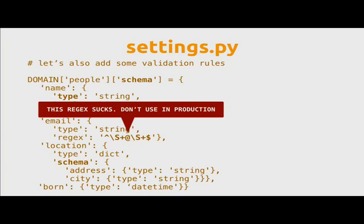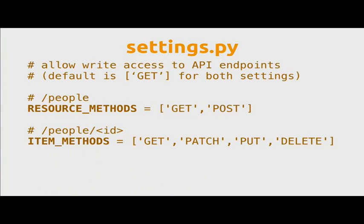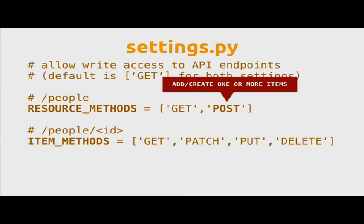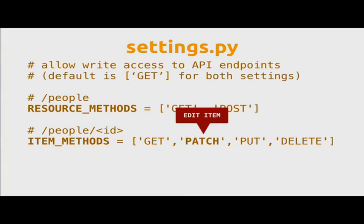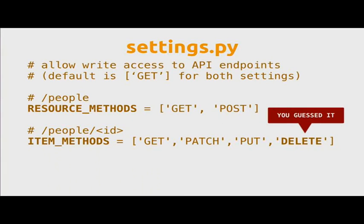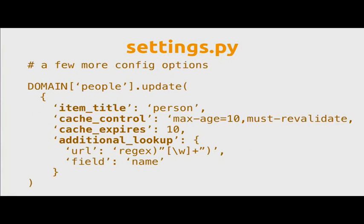By default, an API is read-only, but you can change that. Here we are enabling writing to the API endpoint, allowing editing of items, replacing items, and deleting items. You have to do this explicitly; otherwise the API endpoint will be read-only. This is for safety reasons.